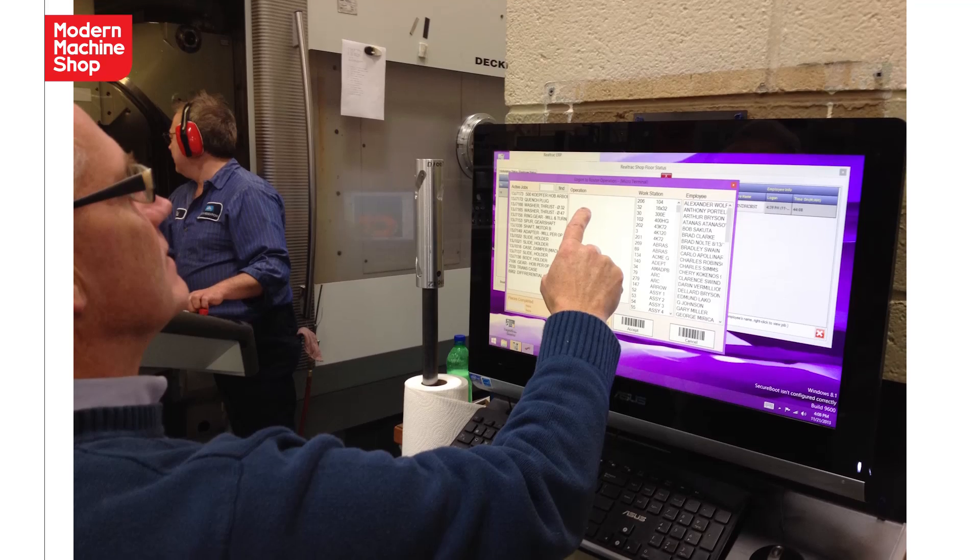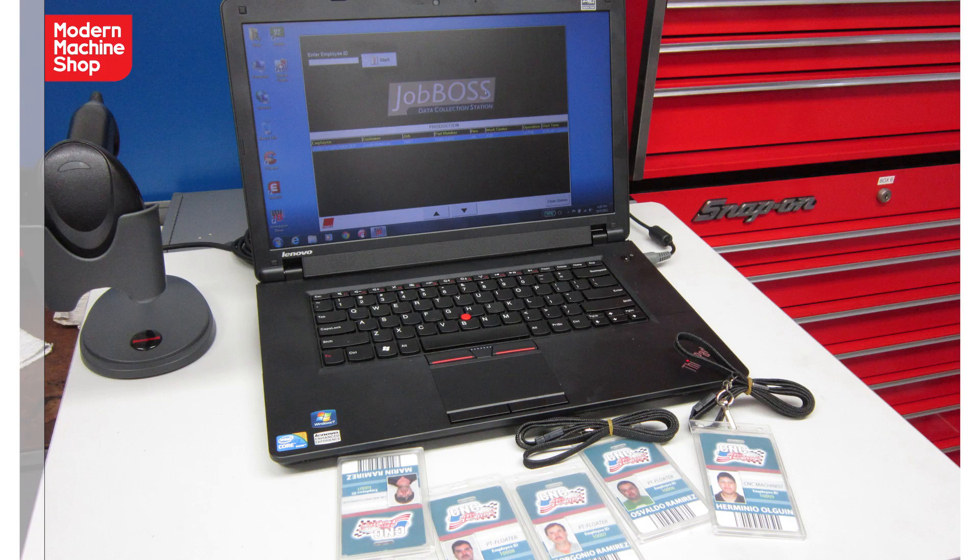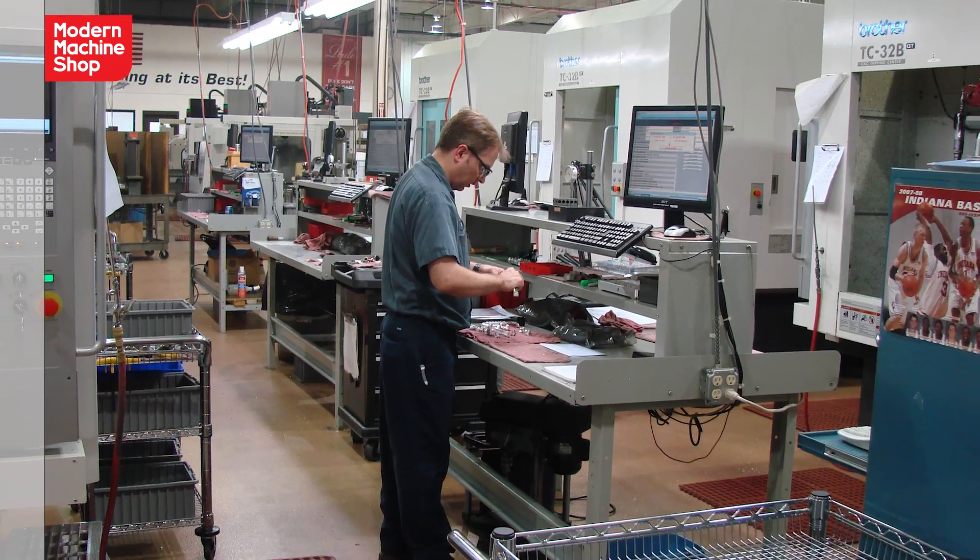An enterprise resource planning system puts all the numbers for a given job at your fingertips. I once visited a shop that thought it was killing it on one job and actually losing its shirt on another. After getting an ERP system, it found out it was just the opposite. ERP lets you make decisions based on true values, not gut feelings.